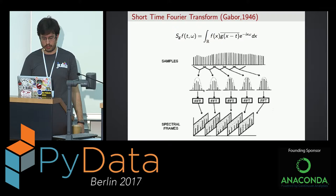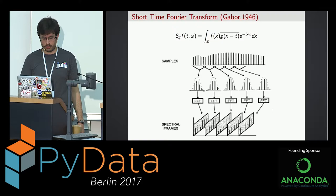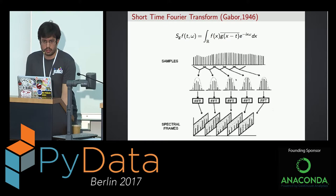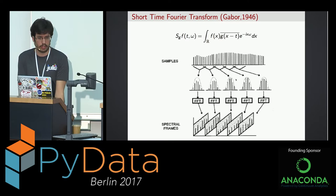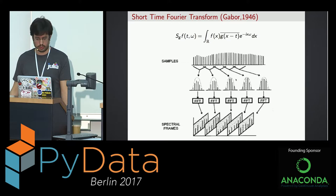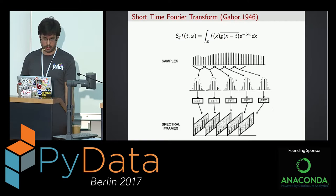The short-time Fourier transform has a window function g that you can move along the time. However, it has technical problems. The systems generated by this transform are called Gabor systems, and they have the uncertainty principle — the same as in quantum mechanics — meaning you cannot perfectly localize time and frequency simultaneously. Also, the size of the window function does not change, so you will not be able to capture very localized features like singularities.